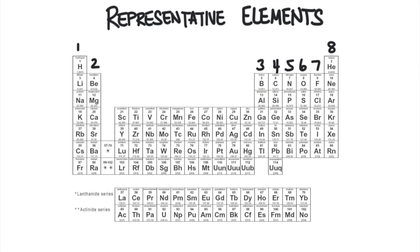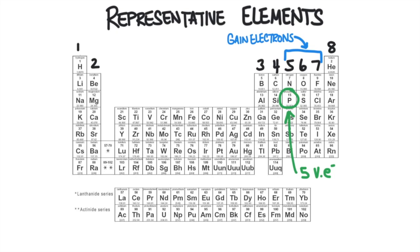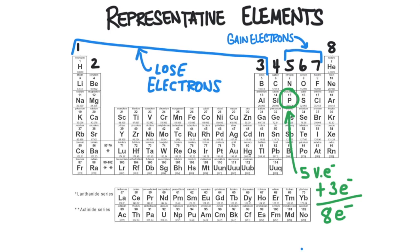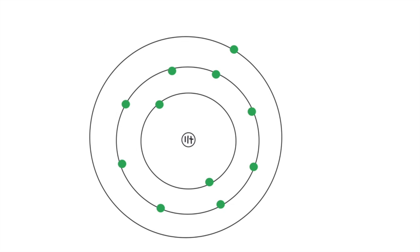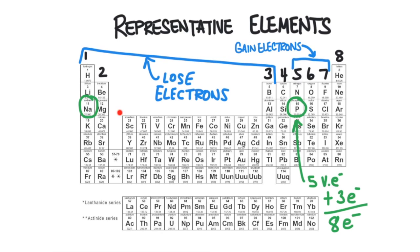These elements don't really want to react with anything because they already have a complete valence shell. Elements that are close to getting eight, like groups five, six, and seven, will gain the extra electrons they need to get eight. Phosphorus, for example, has five valence electrons, so it will gain three electrons to have eight. Elements that are far from having eight, like groups one, two, or three, will lose their electrons. Sodium has one valence electron but a total of 11 electrons. Its Bohr diagram shows two electrons in the first level, eight in the second, and one in the third. If sodium loses that single valence electron, the shell underneath now has eight valence electrons. Atoms don't really lose or gain protons and neutrons, but they do gain and lose electrons all the time according to the octet rule.